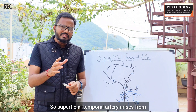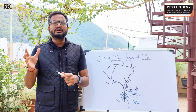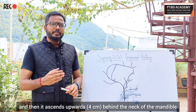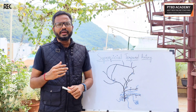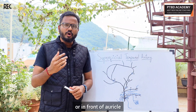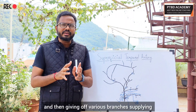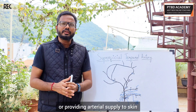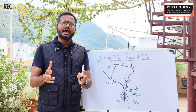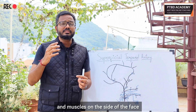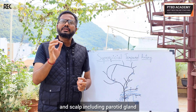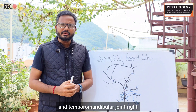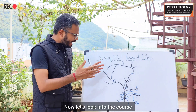Of the two terminal branches of the external carotid, the superficial temporal is the smaller branch, whereas the other — the maxillary artery — is larger comparatively. The superficial temporal artery arises from the external carotid artery and then ascends upwards behind the neck of the mandible or in front of the auricle, giving off various branches supplying arterial supply to the skin and muscles on the side of the face and scalp, including the parotid gland and temporomandibular joint.